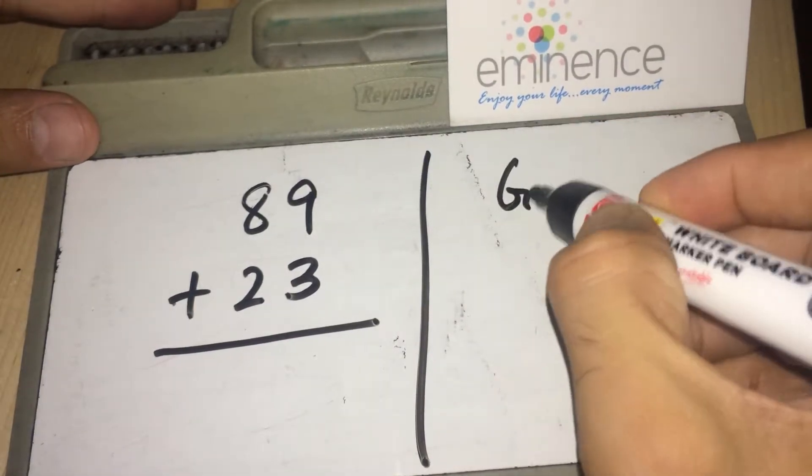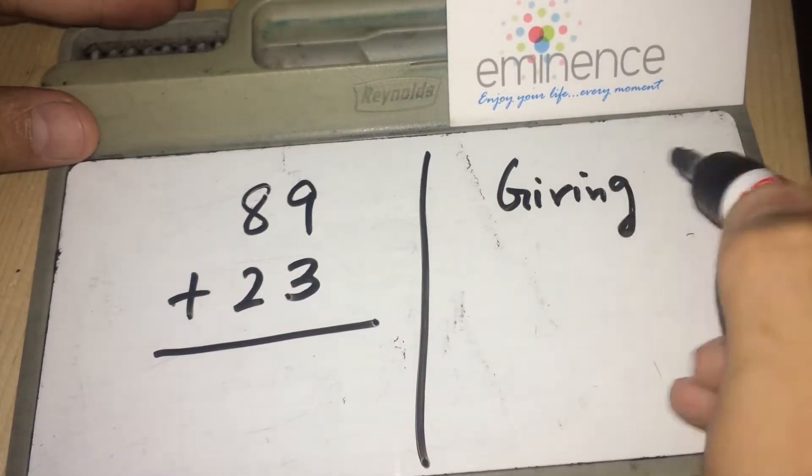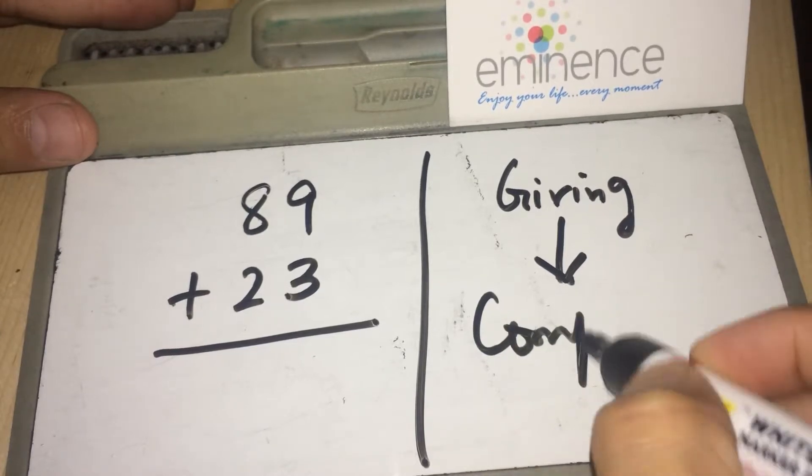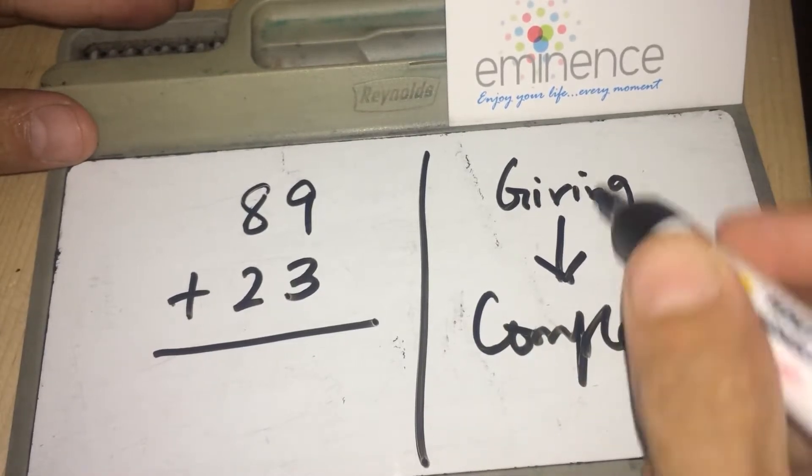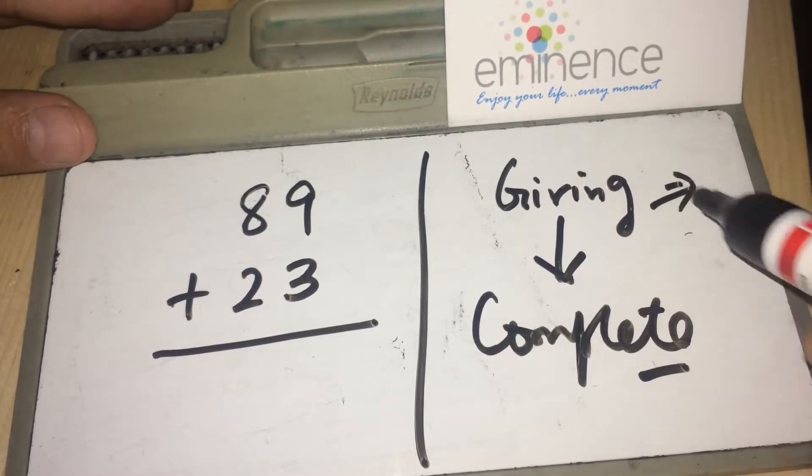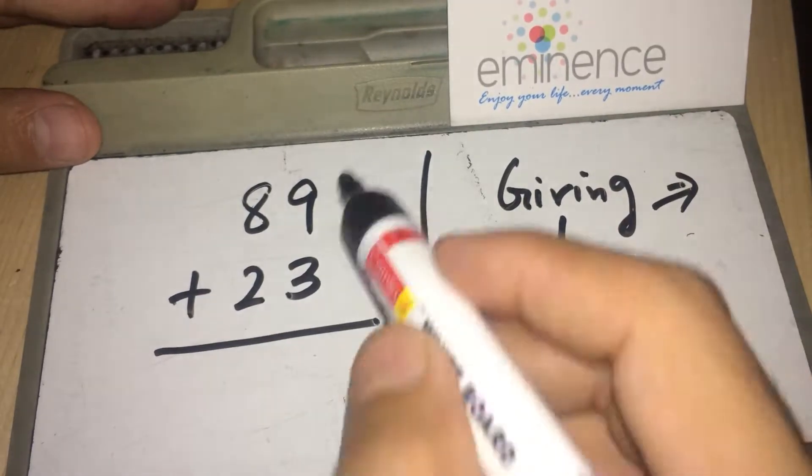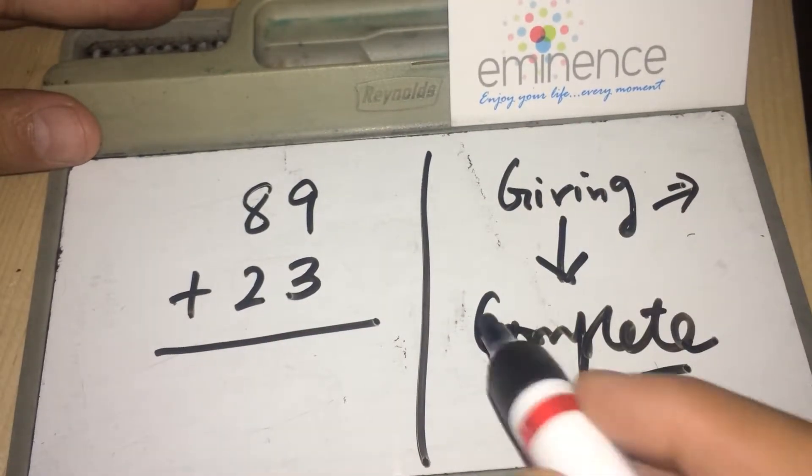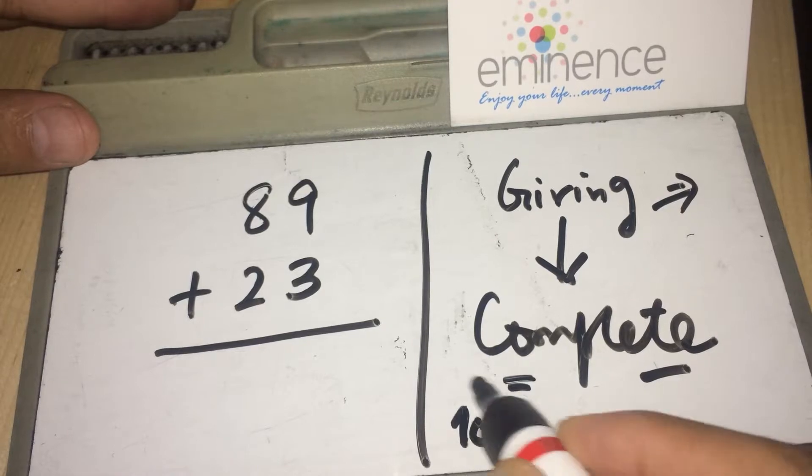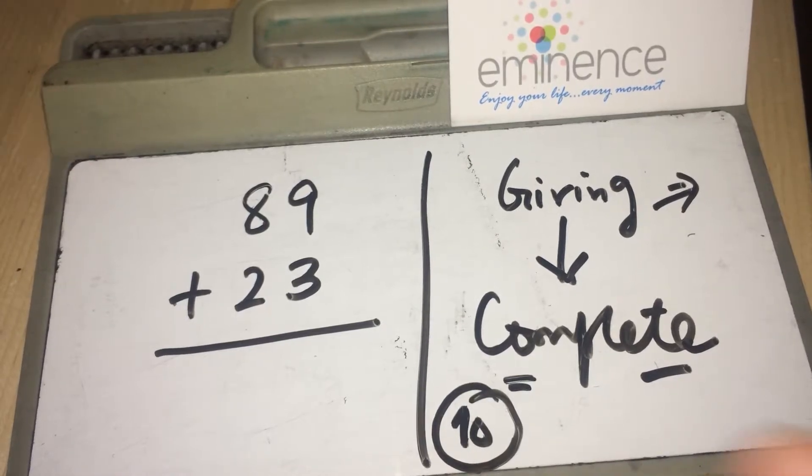This is the concept of giving so that other number becomes complete. You have to give something to the other number to make it complete. Now here 9, by the completion in digits we mean every number wants to become 10 and it gets completed.